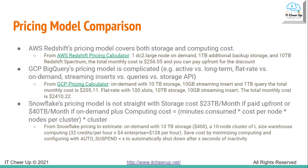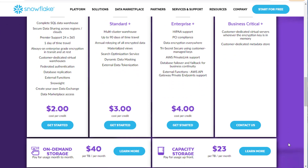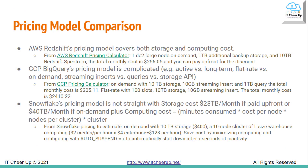Snowflake's pricing model is also not straightforward. Storage cost is $23 per TB per month if paid upfront, or $40 per TB per month on-demand. For computing cost, the formula is: minutes consumed × cost per node × nodes per cluster × number of clusters. Estimating on-demand with 10TB storage comes to $400, and a 10-node cluster of large-size warehouse computing is 32 credits per hour at $4.00. You can save cost by minimizing computing and configuring auto-suspend — an automatic shutdown after a number of seconds of inactivity.